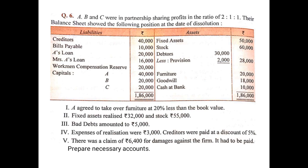After putting up all assets, liabilities, realization, and payments, remember the rule: if there is no information regarding the realization of any asset (e.g., goodwill), we assume it realized no value. But for liabilities, if no information is given regarding payment, we assume liabilities have been paid in full. Here, no information was given for bills payable and Mrs. A's loan. So we assume bills payable was paid Rs. 10,000 completely and Mrs. A's loan Rs. 16,000 completely.